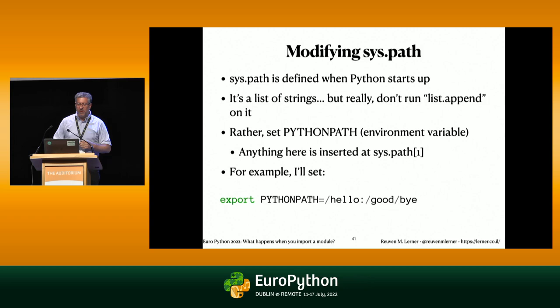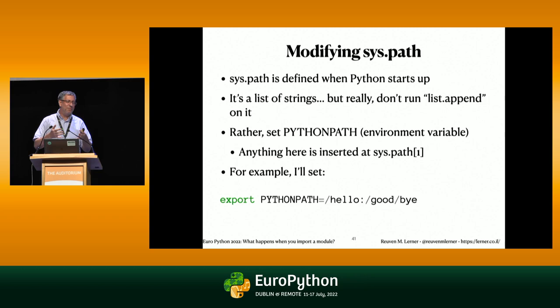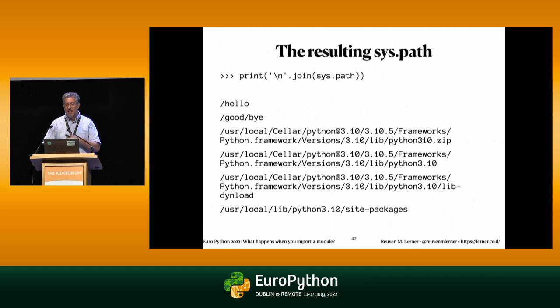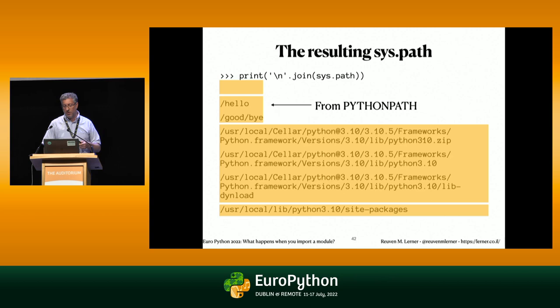What if you want to modify sys.path? Here's the wrong way: don't append to that list from within your program. It will work — unfortunately. Instead, set the environment variable PYTHONPATH outside of Python. When Python loads up, it will add those directories to sys.path. For example, at the shell: 'export PYTHONPATH=/hello:/goodbye'. Then sys.path will show: current directory, PYTHONPATH entries, standard library, then pip install directory in that order. Python doesn't care if those directories don't actually exist — it'll look and if it doesn't find that directory, it'll move on to the next one.